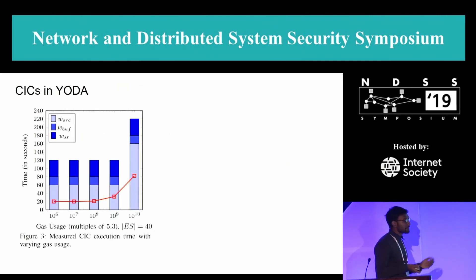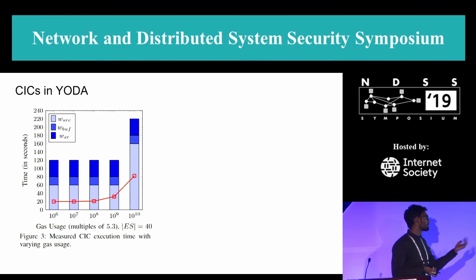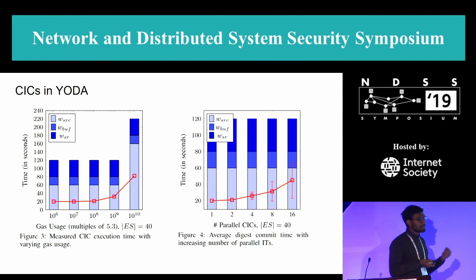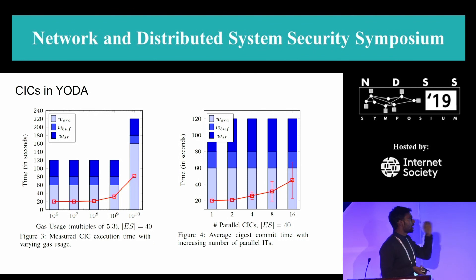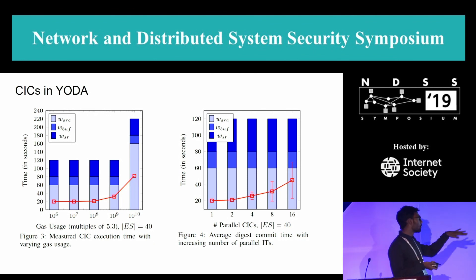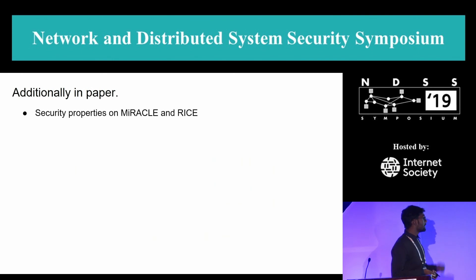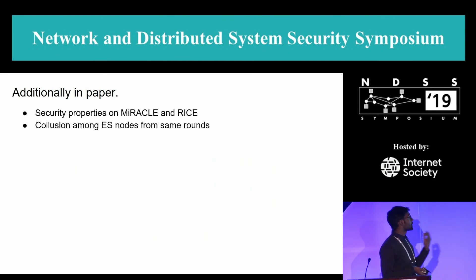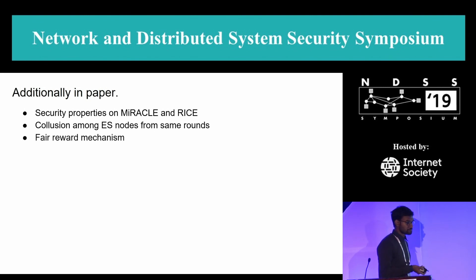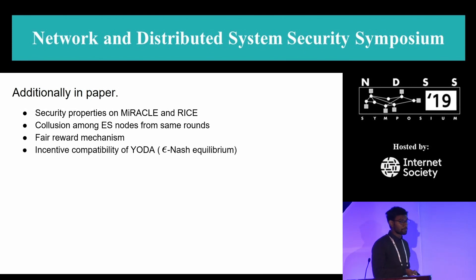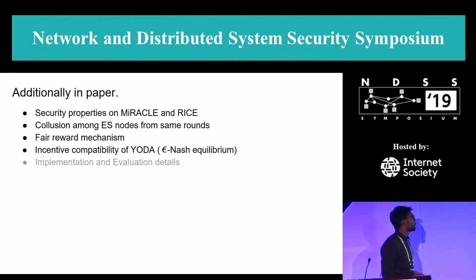We implemented the entire Yoda system using the EVM, ran CITs consuming up to 50 billion gas, and executed up to 16 parallel CITs in Ethereum. We also present security proofs for Miracle and RITE, consider collusion among ES nodes within the same round, provide a reward mechanism proved to be incentive-compatible under selfish behavior, and give further implementation details.